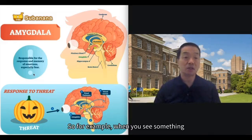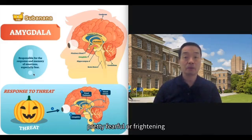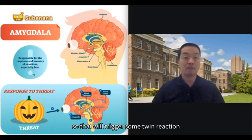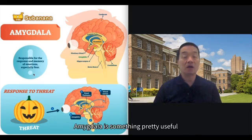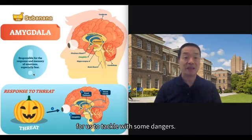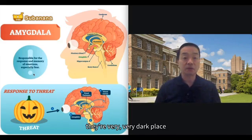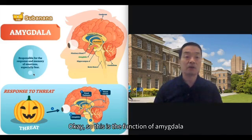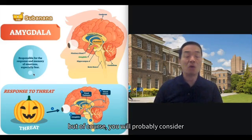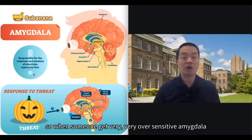For example, when you see something pretty fearful or threatening, that will trigger a chain reaction that actually starts from the amygdala. The amygdala is very useful for helping us tackle danger — for example, while you are walking in a very dark place, it's necessary to feel a little fearful. But of course, you might wonder: when someone becomes over-sensitive in the amygdala, what will happen? That's a problem I'll tell you about later.